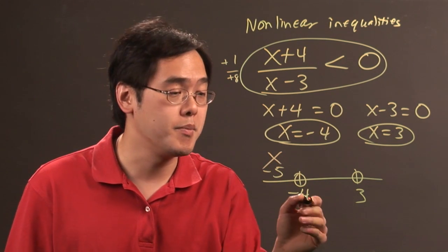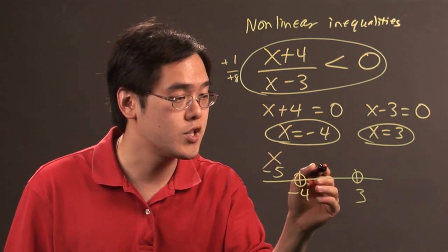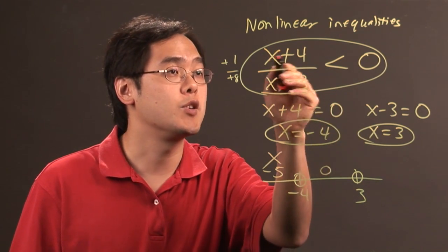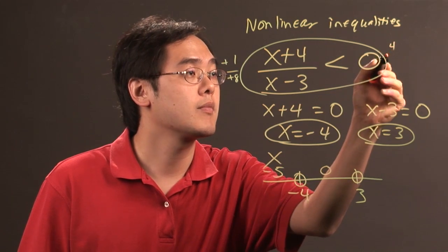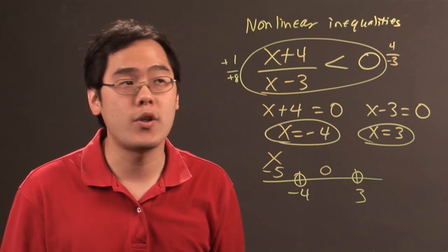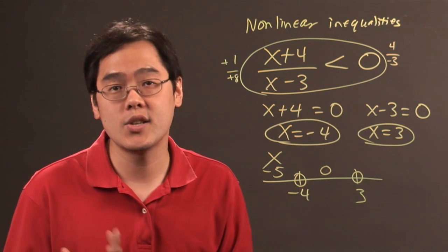Now we'll plug in a number between -4 and 3, let's say 0. When you plug in 0, 0 + 4 = 4, 0 - 3 = -3, 4 / -3 = -4/3. Negative 4/3 is less than 0, so that works.